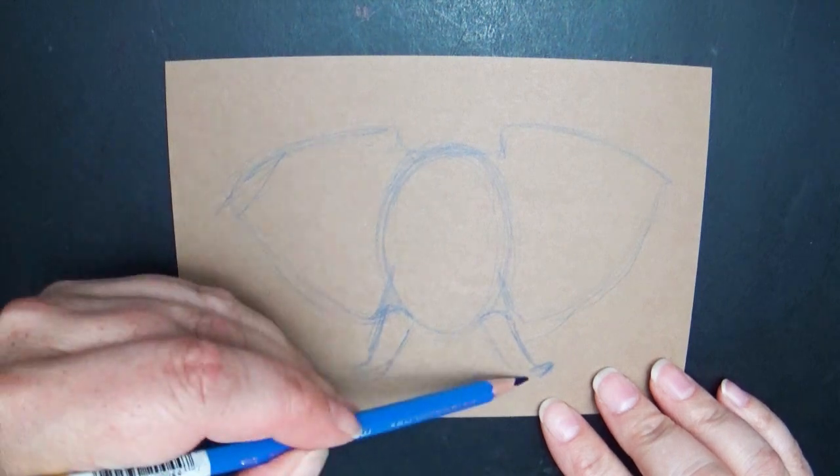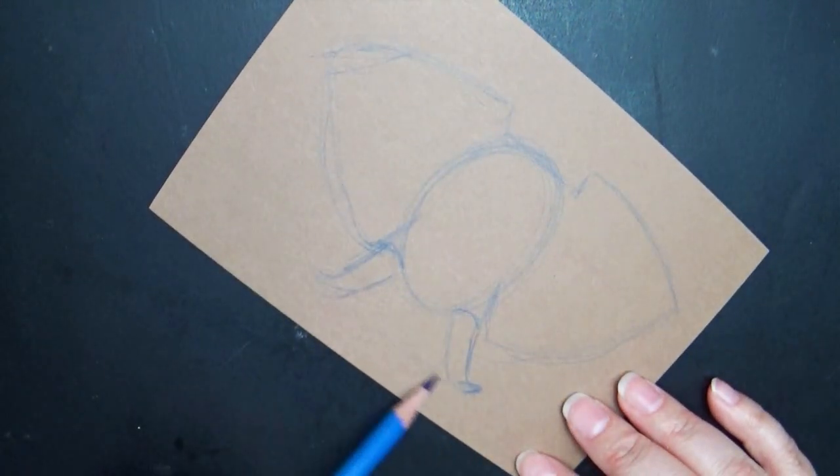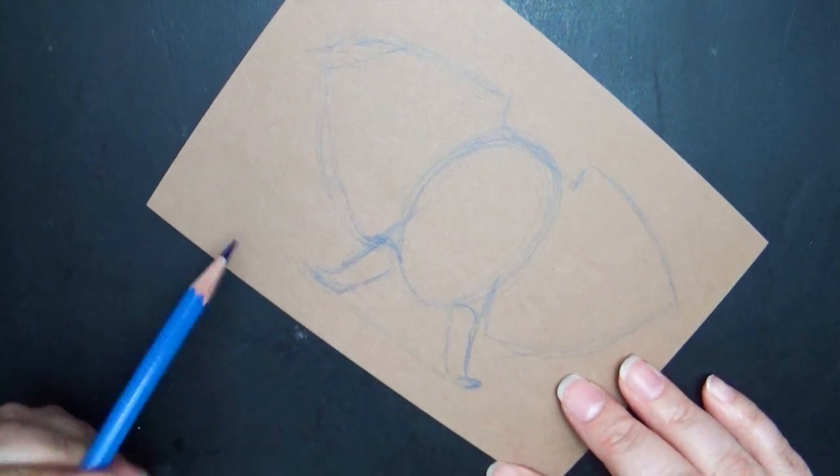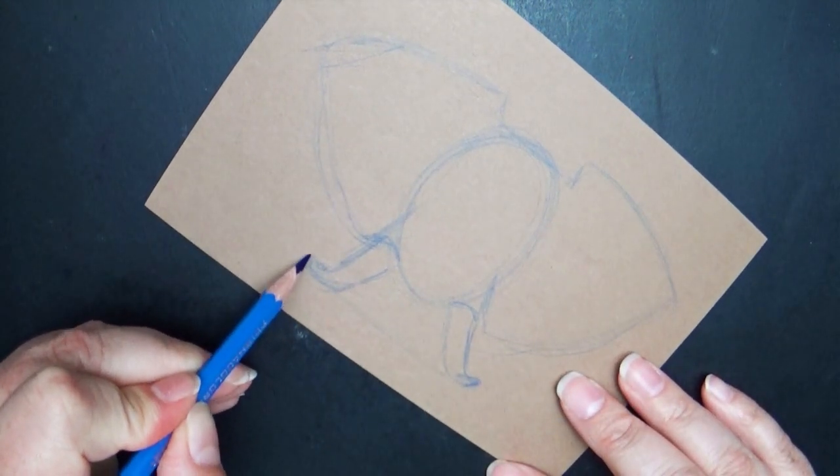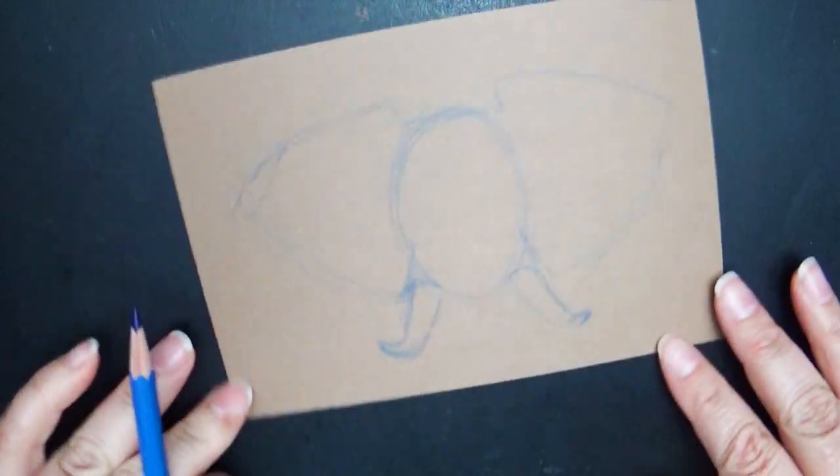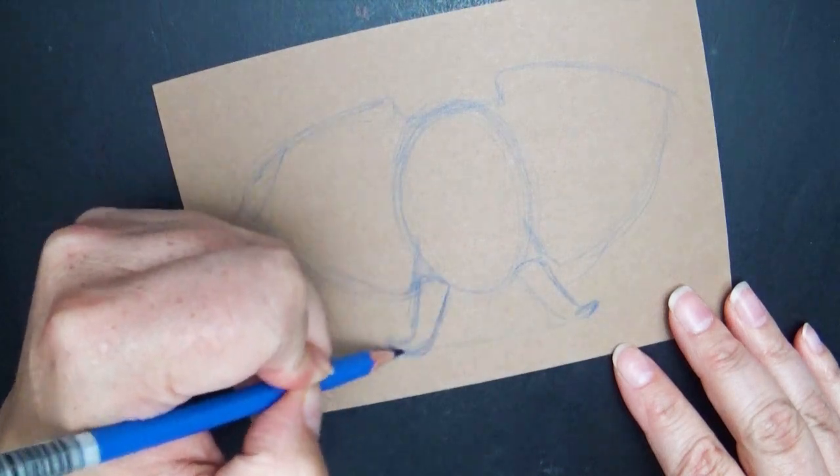Some grow super long and curve inward. Some just grow super long and curve outward. Some are really small so really it's just personal preference to how you want your tusks to look. Just don't get frustrated. It did take me a while to get those down.